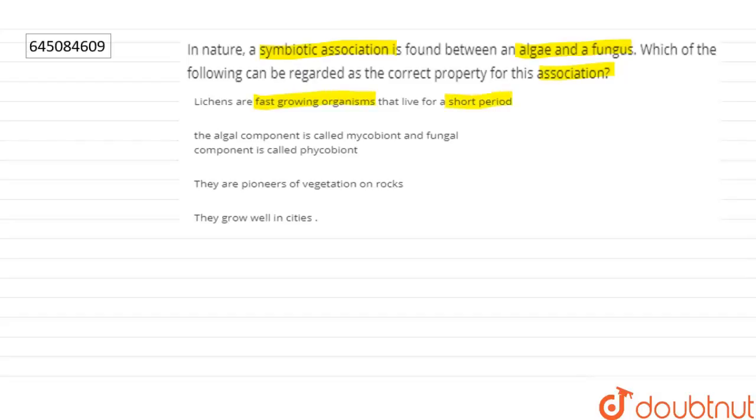The algal component is called mycobion and fungal component is called phycobion. They are pioneers of vegetation on rocks. They grow well in cities. So symbiotic association is a type of relationship in which both species, at least one species, get benefit.